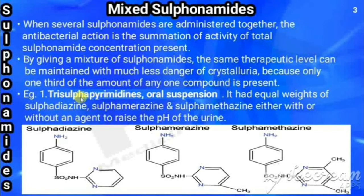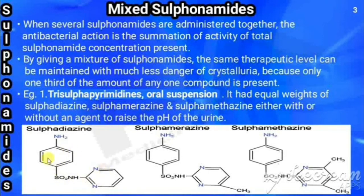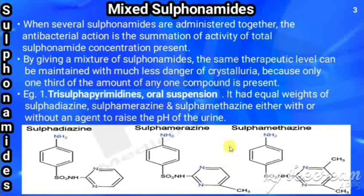Trisulfa pyrimidines consists of three sulfonamide drugs each having a pyrimidine ring. It contains equal weights of sulfadiazine, sulfamerazine, and sulfamethazine, with or without an agent to increase urine pH. Looking at the structures: sulfadiazine has a sulfonamide group with a pyrimidine attached at N1; sulfamerazine has the same pyrimidine with one methyl group; and sulfamethazine has two methyl groups on the pyrimidine.